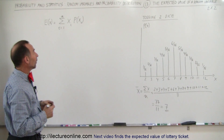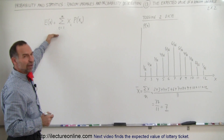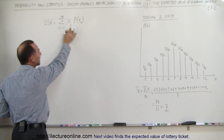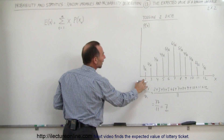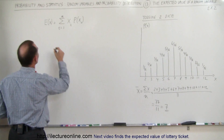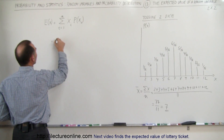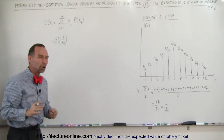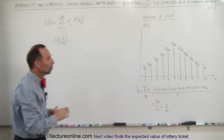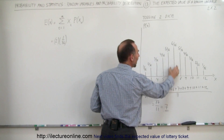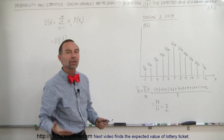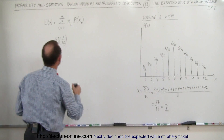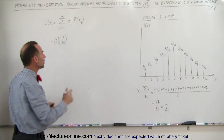Now what do we get as expected value? Here we take the value of each toss and multiply it times its probability in each case. So this would be equal to the number 2, multiplied times the probability of getting it, which is 1 out of 36. That's called the weighted average — the numbers that have a higher probability have more influence on the ultimate result than the numbers that have a smaller probability.